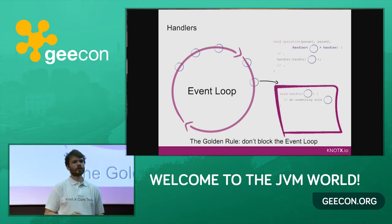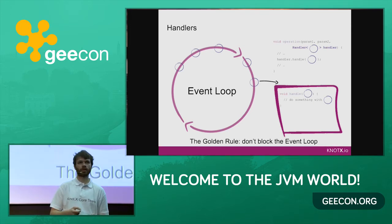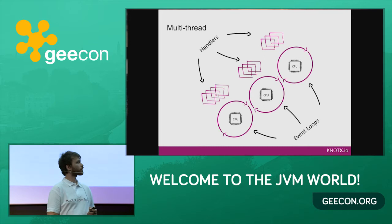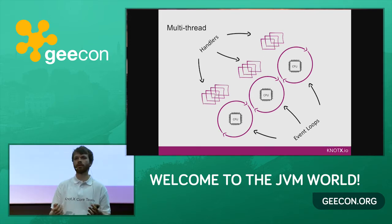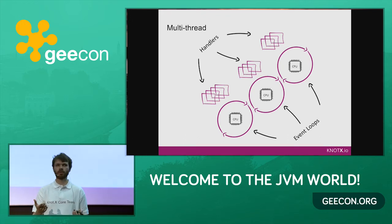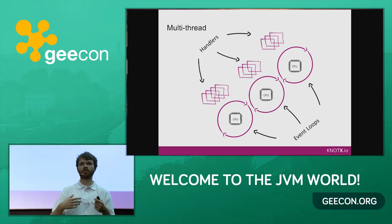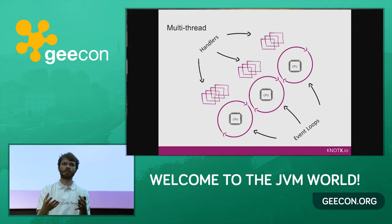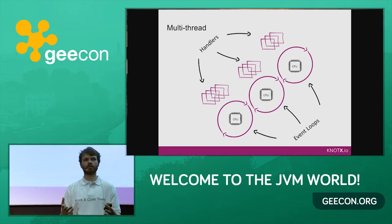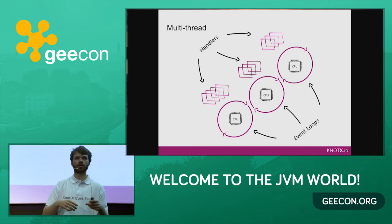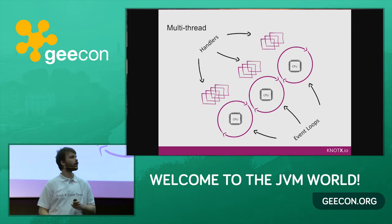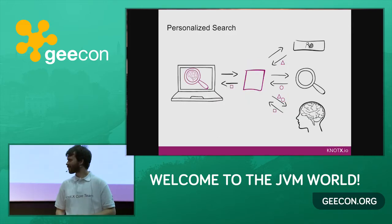The event loop idea is simple: it's one thread that spins around and delivers messages to handlers interested in a particular message. We cannot do any blocking operations inside handlers because we will stop the whole event loop. Since it runs on a single thread, we don't need to worry about synchronization. This event loop concept is called the reactor pattern, also used in Node.js. But there is one significant difference: Vert.x handles multi-threading for us. If you run Vert.x on a laptop with eight cores, you'll have eight event loops.